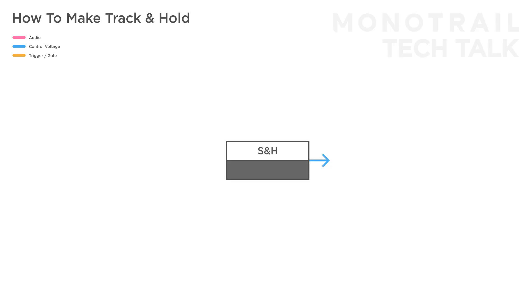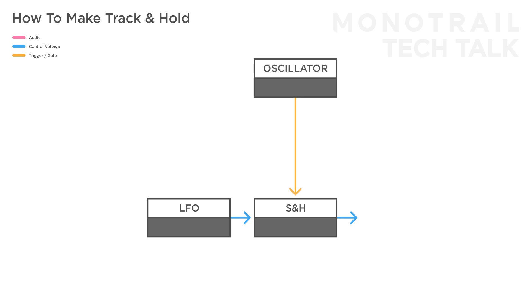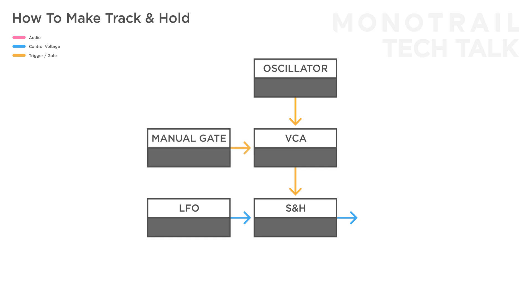Before we go on with patches, here's a simple trick that can turn a normal sample and hold module into a track and hold. Analog sample and hold modules are really good at dealing with audio rate signals. So when you feed a slow sine wave LFO into the sample input and use an audio rate gate signal — like the square wave output of a steady high-pitched oscillator — into the gate input, you create a tracking function. The module samples and holds the incoming signal at such a high rate that the output is effectively the same as the incoming signal. To add the hold function, feed the oscillator through a closed VCA before the sample and hold. Now when you send the VCA a gate to open it, the module will track the incoming signal and hold it when you stop feeding a gate — just like a track and hold circuit.